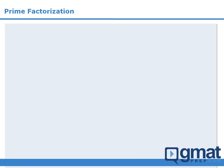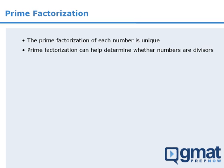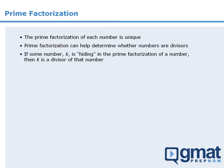To summarize: the prime factorization of each number is unique. The prime factorization of a number can help us determine its divisors. And if some number k is hiding in the prime factorization of a number, then k must be a divisor of that number.